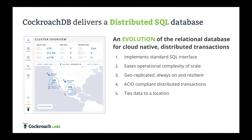A distributed database should ease operational scale. A lot of people have gone through the manual sharding process — it's difficult with a lot of operational overhead. Distributed systems should automate scale, and that should be a requirement. These databases should be always-on and resilient. If you're going to store data, you can't lose data. So you've got to be ACID compliant and allow for transactions. We implement serializable isolation — not snapshot isolation and eventual consistency, but true consistent transactions.